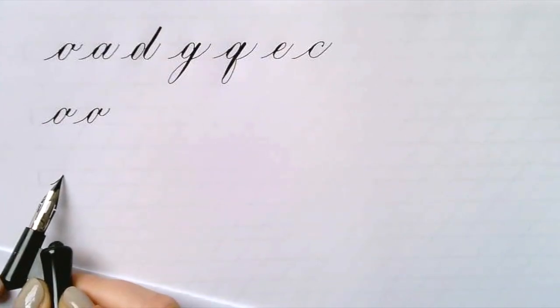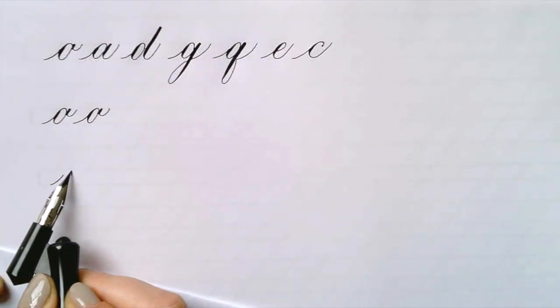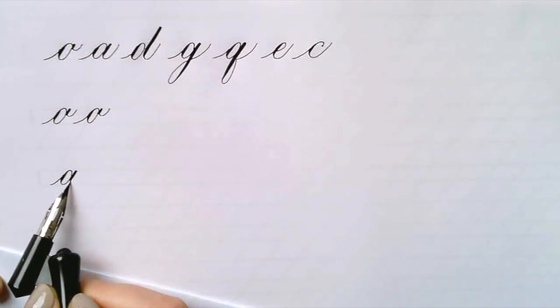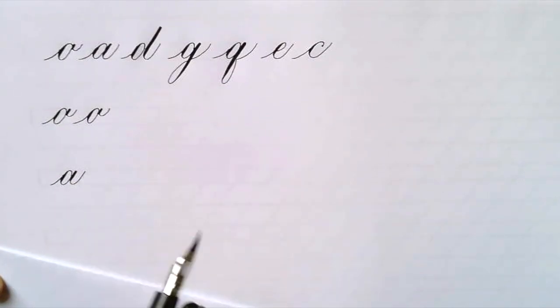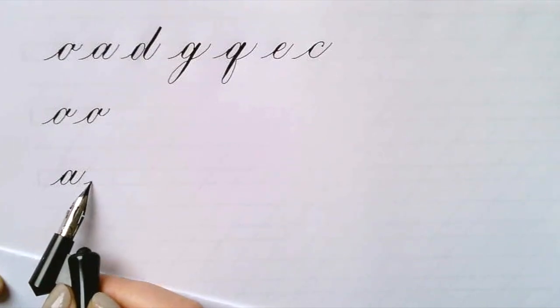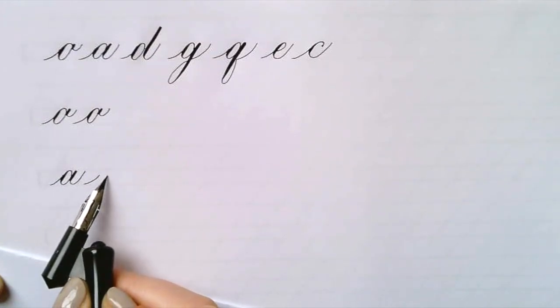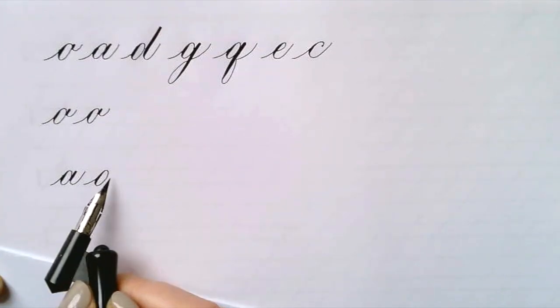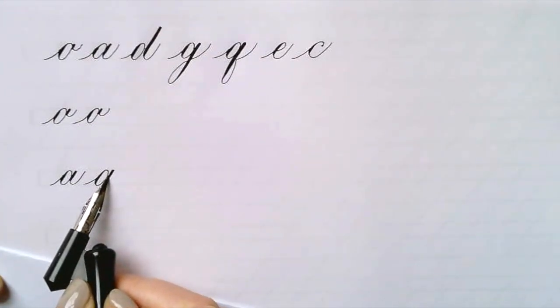The in-stroke goes two-thirds of the way up, and then you make the oval for the A and an underturn arch. Do that again. Light in-stroke two-thirds of the way, build the oval and stop, and add the underturn arch coming all the way up.